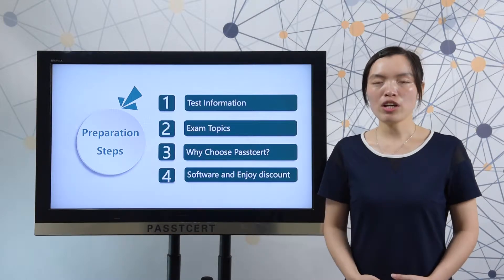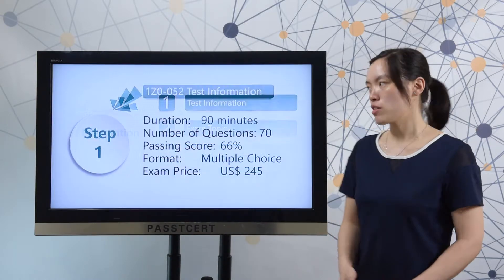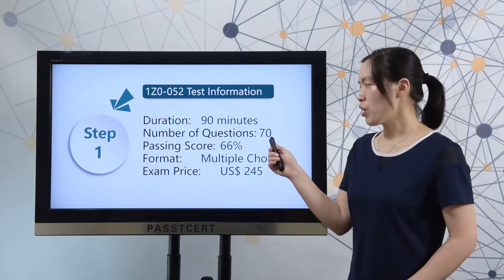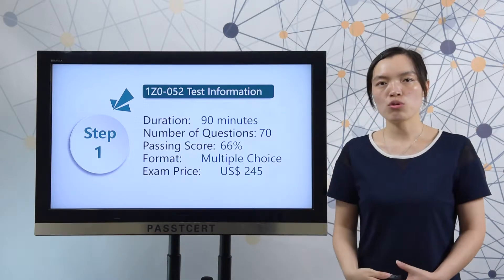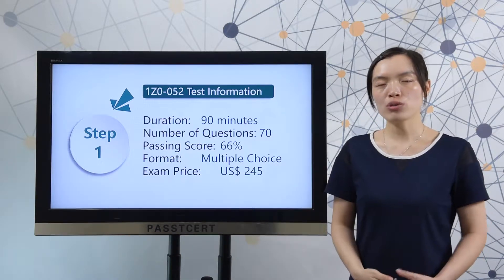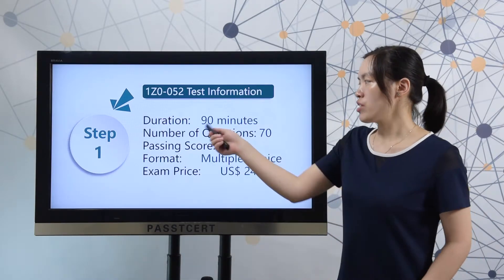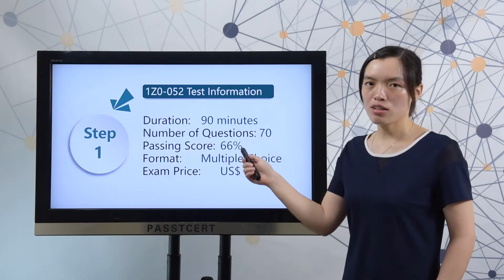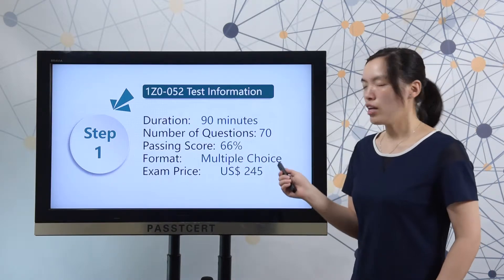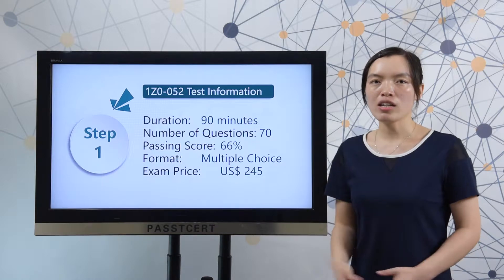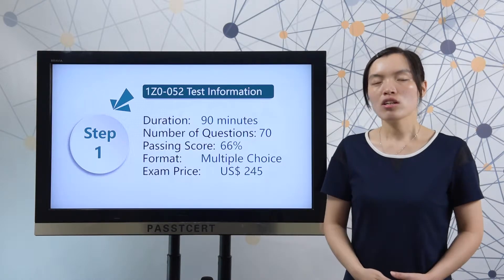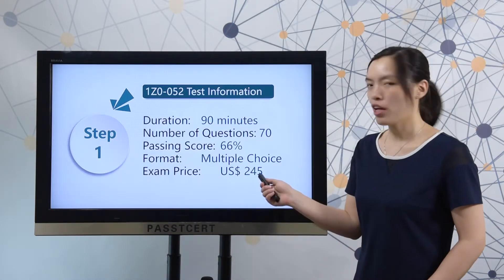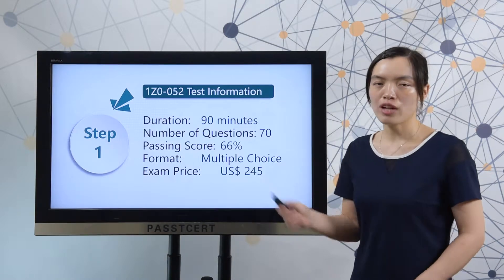Let's view the real test information first. You can know that there are 70 questions in the real 1Z0052 exam. The exam duration is 90 minutes. The passing score is 66%. The exam format is multiple choice. And the exam price is 245 US dollars.